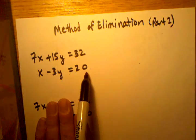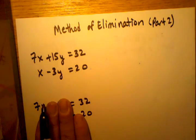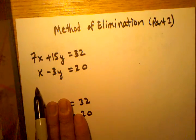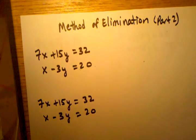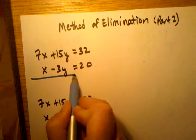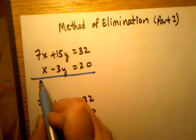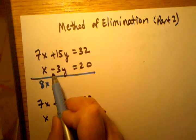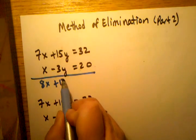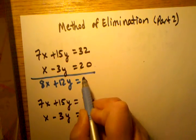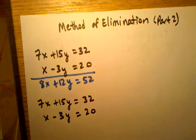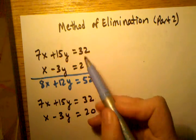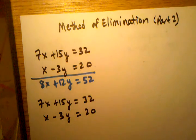If I were to add these two equations I would still have both variables. What I would end up with is 8x plus 12y equals 52. I didn't eliminate a variable so this method won't help me if I just use this method the way that the equations are written right now.